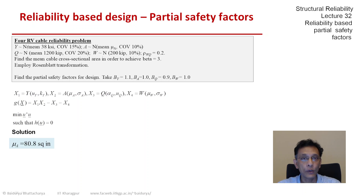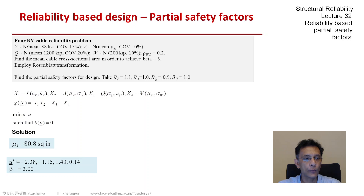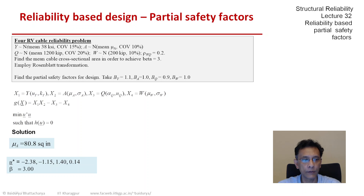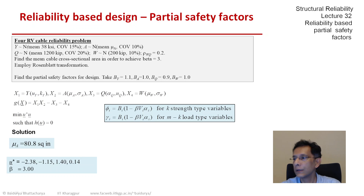If we now need the partial safety factors for design, we would need the checking point, the sensitivities, and so on. Here are the other details of the solution. We have the u* values for the four random variables — 1, 2, 3, and 4. If you square them and sum them, you will get a value of approximately 9, confirming beta equals 3.